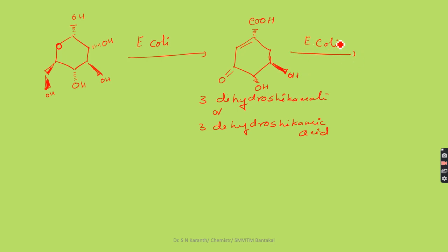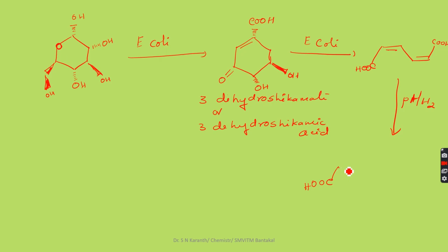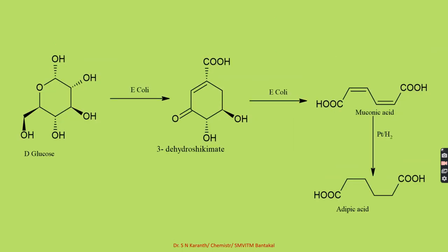Further, the 3-hydroxy shikimate undergoes reaction with E. coli to produce muconic acid — a double-bonded compound formed via a ring-opening reaction. Then, reduction with platinum catalyst gives adipic acid. The starting material used is glucose, which is environmentally friendly. E. coli is used as a catalyst in two steps, reducing use of certain chemical reagents. Toxicity is significantly reduced and no harmful byproduct is generated during the synthesis.